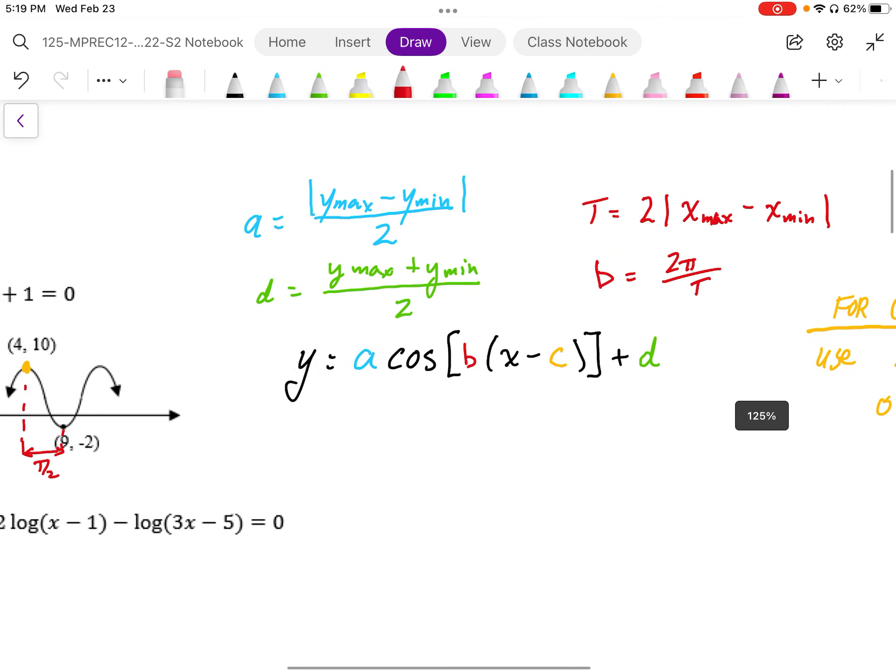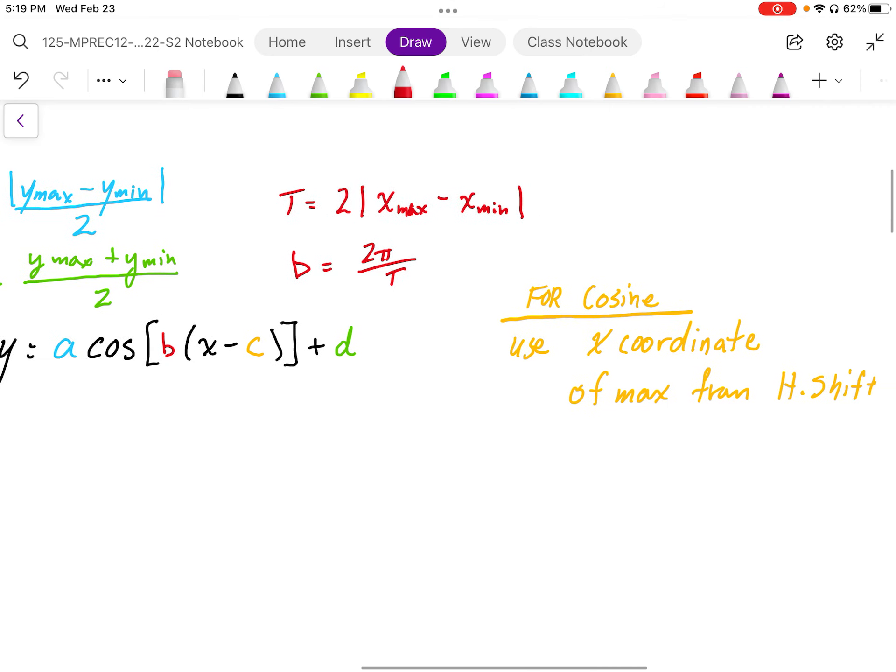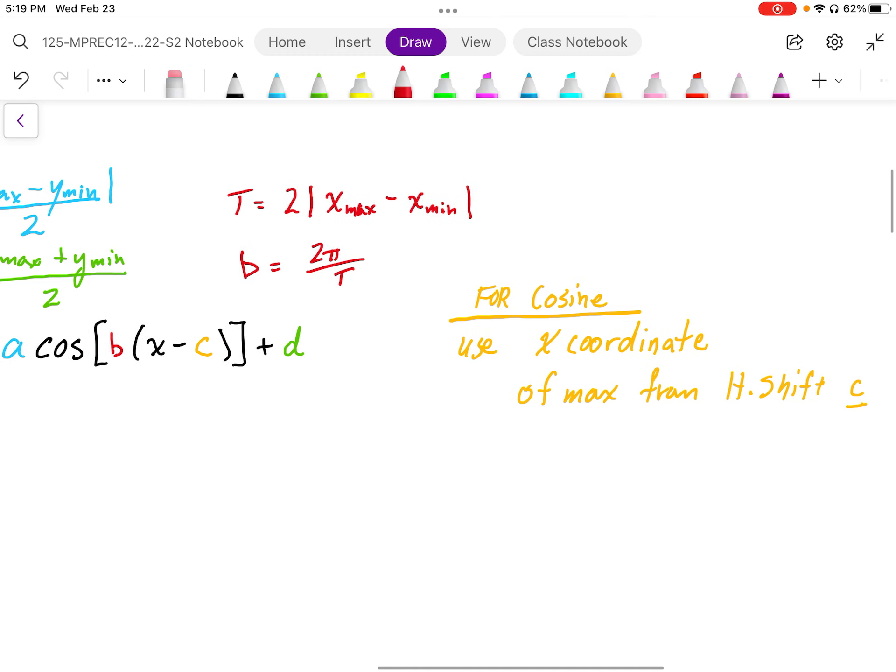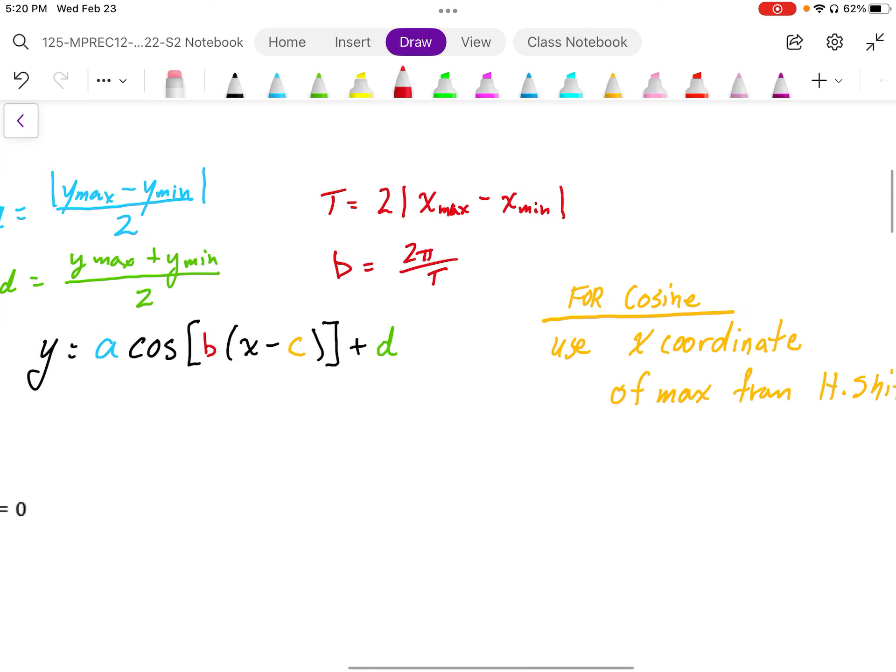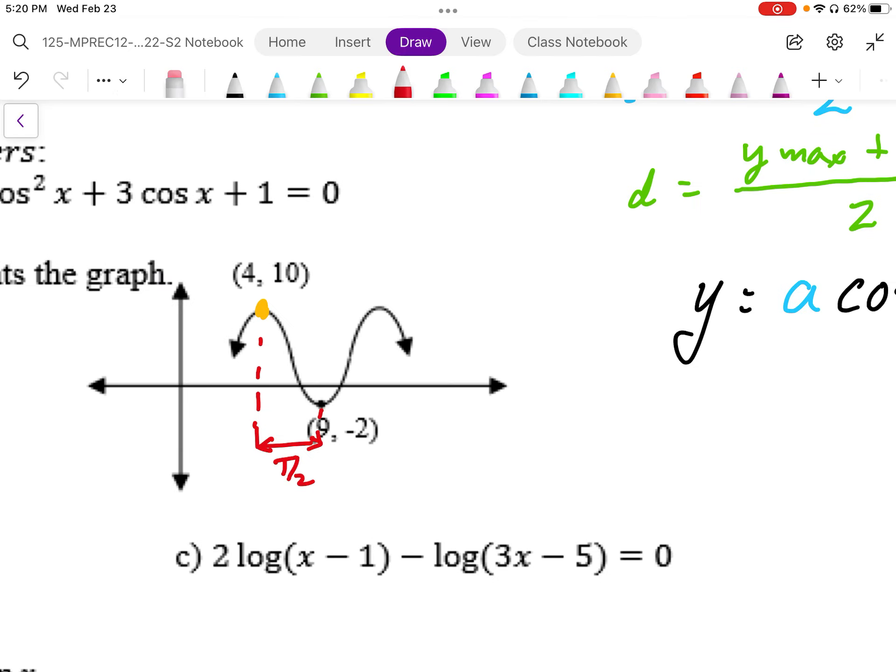And then for the c, the horizontal shift in factored form, what we can do is use the x coordinate of the maximum for cosine. And that gives us the horizontal shift. So, if we take a look at that yellow dot here, that's the max point of a cosine, and that is the starting point of a cosine function.